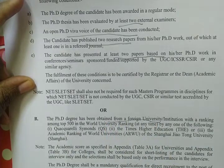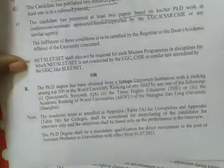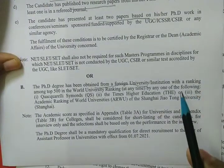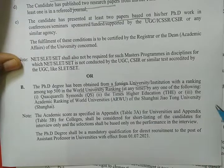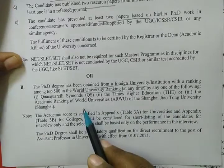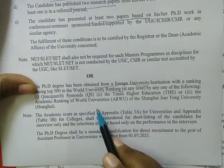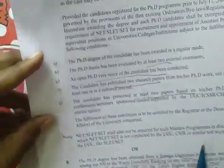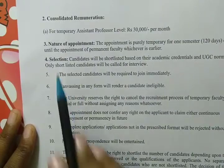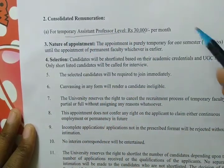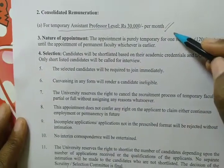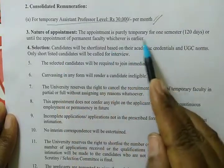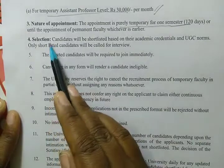Additionally for eligibility A: the PhD must have been awarded in regular mode; the PhD thesis should have been evaluated by at least 2 external examiners; the PhD viva-voce must be an open viva; the candidate must have published 2 research papers from their PhD work; and at least 2 papers based on PhD work must have been presented in conferences or seminars sponsored or funded by UGC, ICSSR, or CSIR.